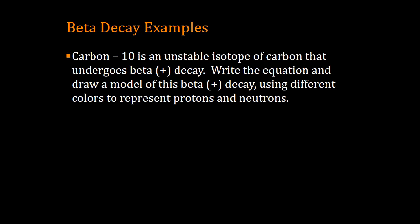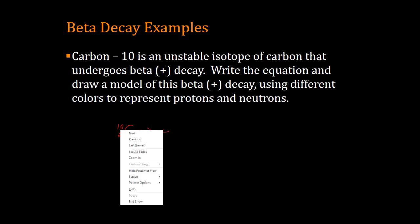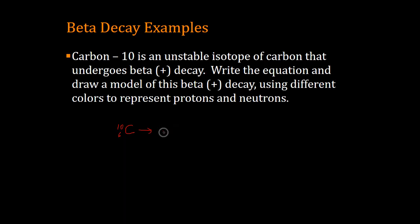So beta decay example. Carbon 10 will decay. It undergoes beta plus decay. Write an equation and draw a model of this beta decay using different colors. Alright, so carbon 10. We find carbon on the periodic table and it's element number 6. It's got 6 protons. It's got a mass number of 10. We have the decay arrow and it says it undergoes beta decay. Remember, beta decay means it's going to emit a positive charge particle, a beta plus particle, so an E plus. Now the way we think of an E plus particle is it's got no mass number, 0.